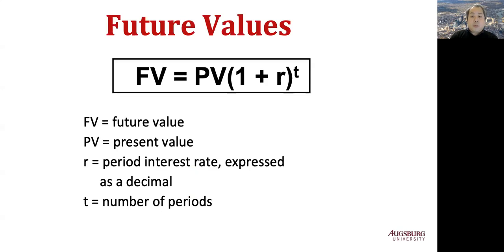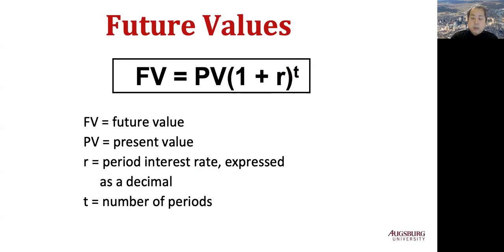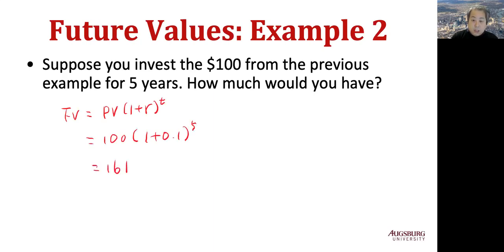This is the general formula to get a future value from present value. In our example, two years later with $100 present value at 10% interest, the future value is $121. The formula is: Future Value equals Present Value times (1 plus interest rate) to the t-th power, where t is the number of periods. For example, investing $100 for five years at 10%, the future value equals $100 times (1 plus 10%) to the fifth power, which is $161.05.